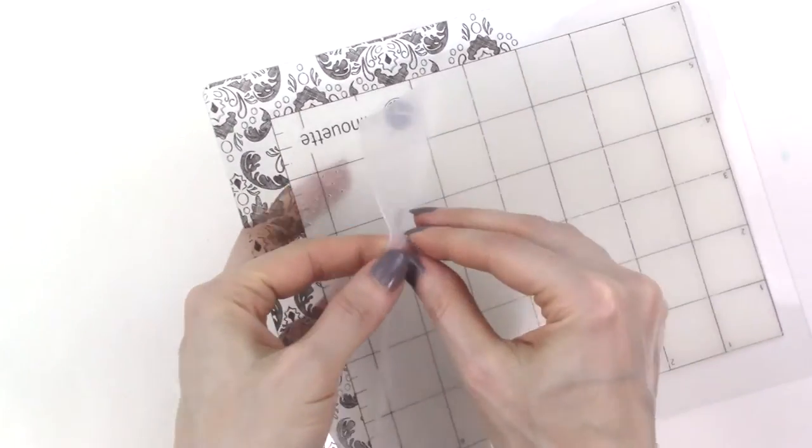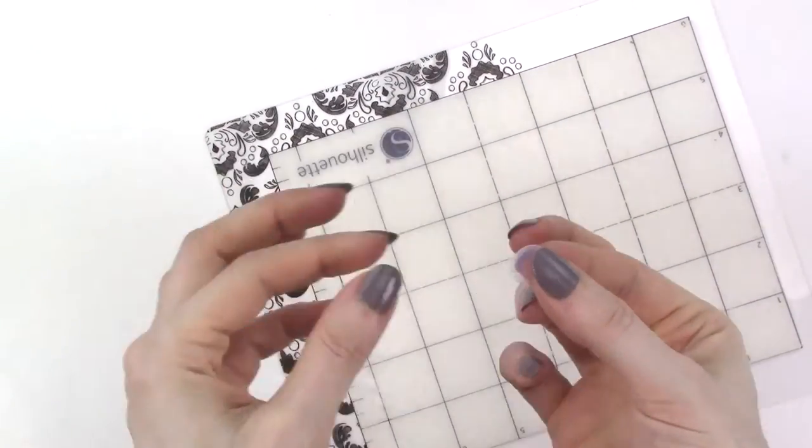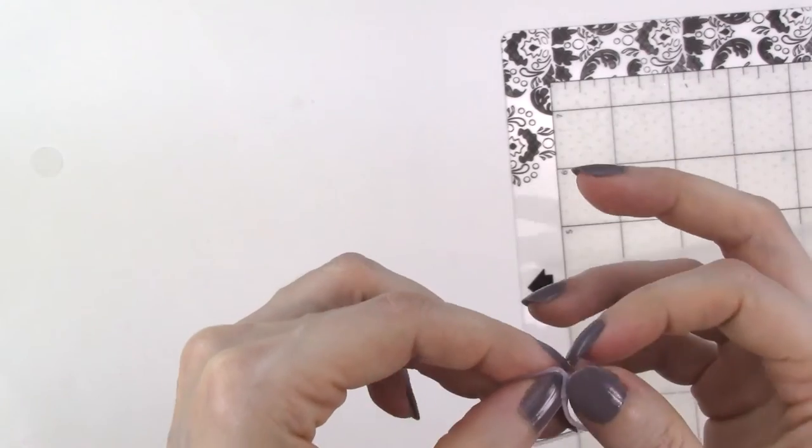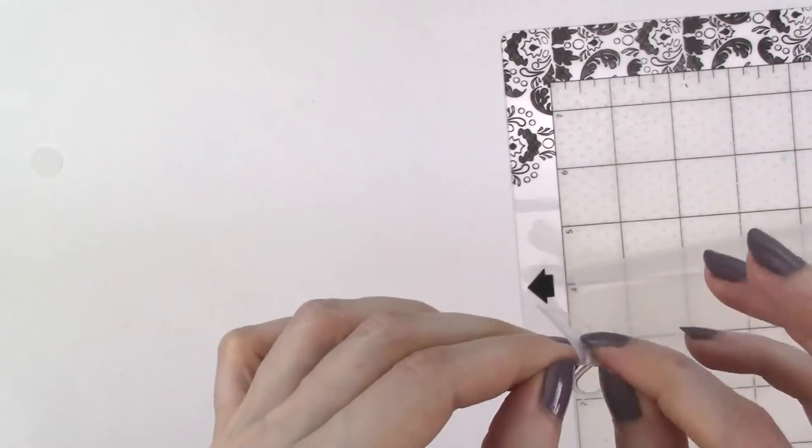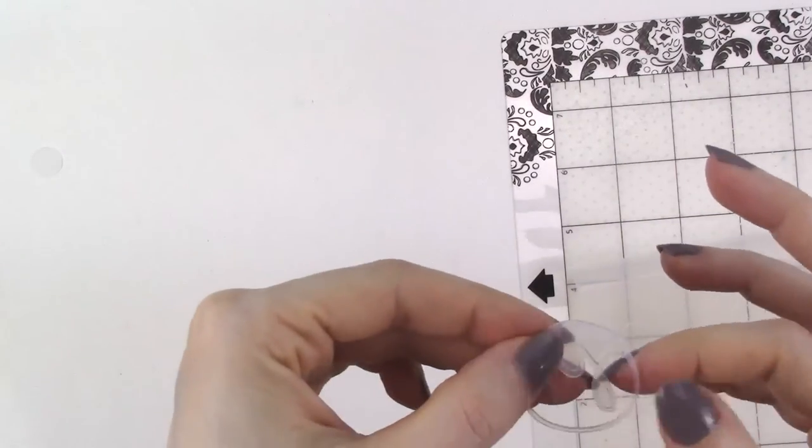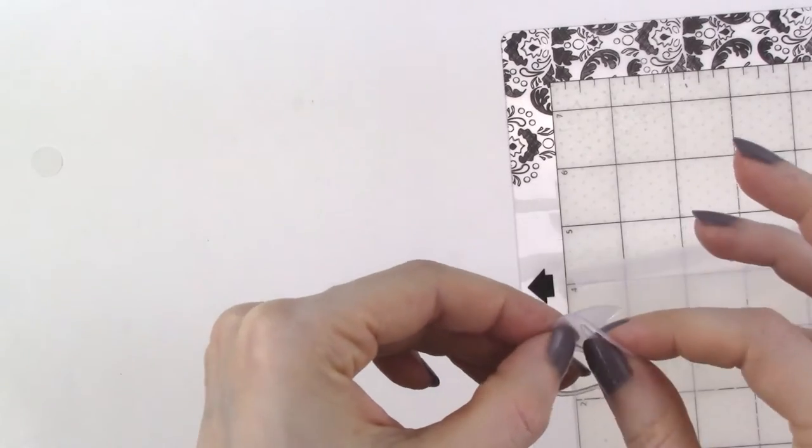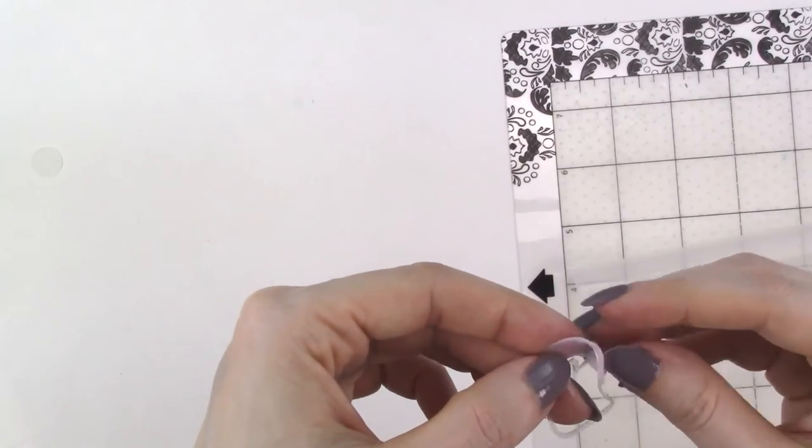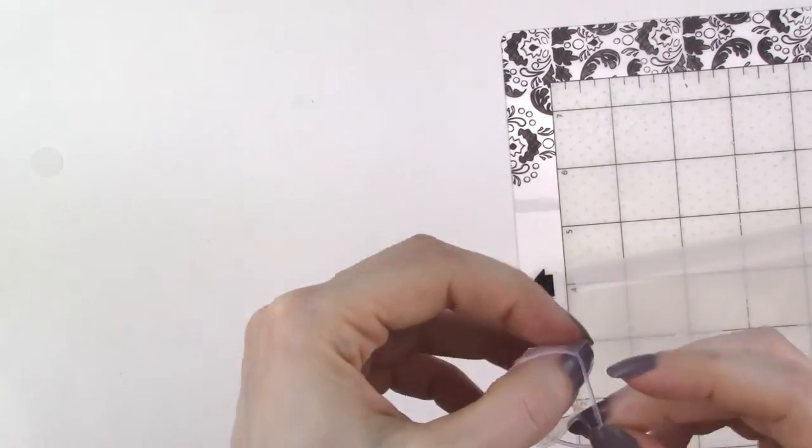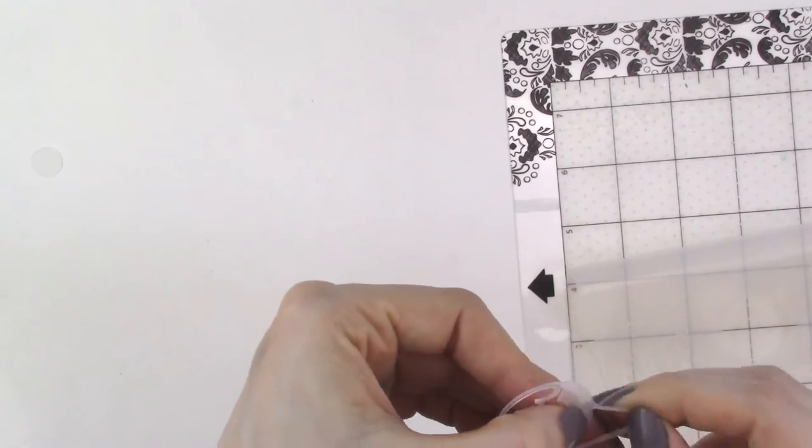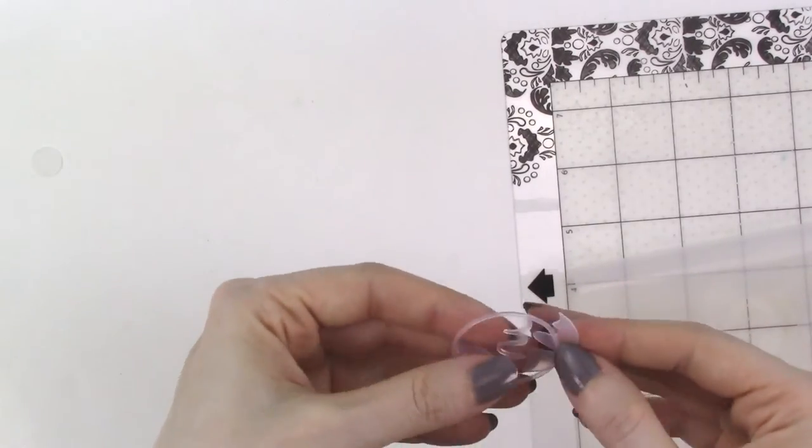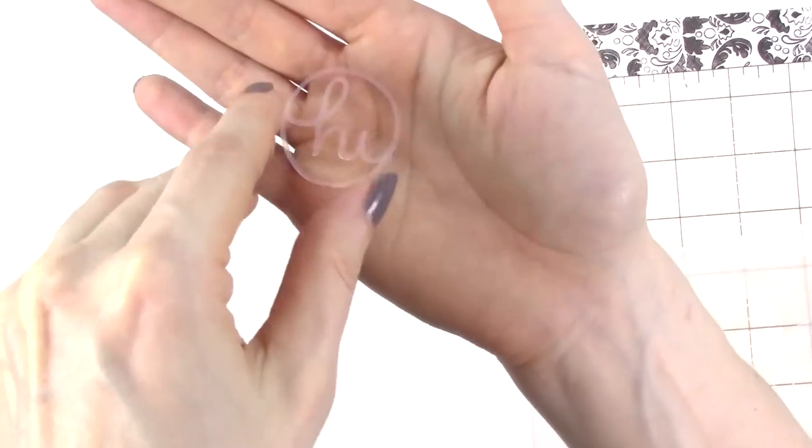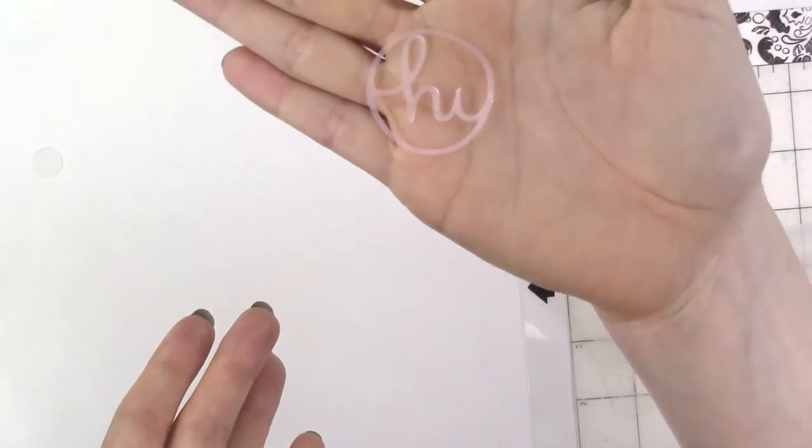Alright so first I'll pop out the circle which cut fine no problem. Next I'll remove the hi stamp from the sheet. It also cut cleanly but I want to be careful as I'm weeding out the inner area since I don't want to tear the stamp. The material is very flexible though so there weren't any problems. I'm not going to use the dot on the i in hi just because I think that it will be too fussy to deal with and it's really not necessary in this case.